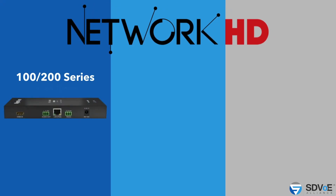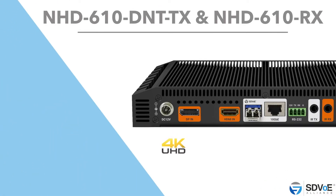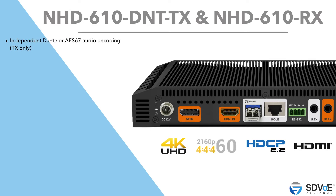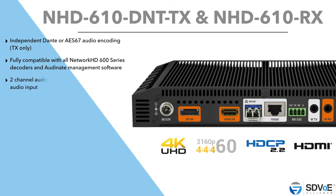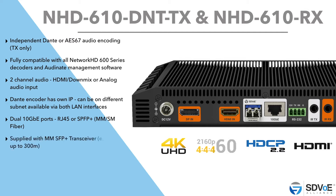Our Network HD brand consists of three different technologies in AV over IP: H.264, JPEG-2000, and SDVoE. At the show we're launching fantastic new products across all of our technologies, but one of my favorites is the SDVoE-based Network HD 610 Dante TX and the new RX. Building on our existing platform, these have Dante encoding, are fully compatible with the rest of our Network HD 600 SDVoE range. It's a two-channel Dante audio encode with dual 10-gig ports. We've now added fiber as well as copper transmission, supplied with a multi-mode SFP with failover operation, and USB 2 across the board.